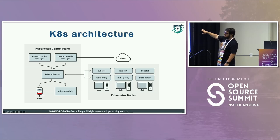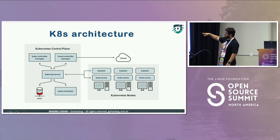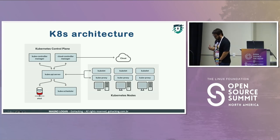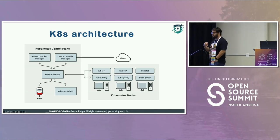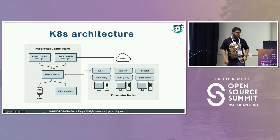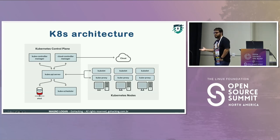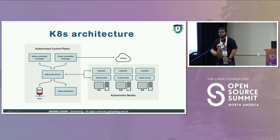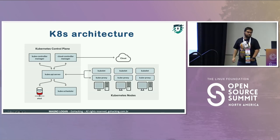The kubelet talks to the API server, or the API server sends information back to the kubelet — deploy this container on your node — and then sends health information back through the API server to etcd. The kube-proxy, by default, manages IP tables on Linux to handle internal and external communications inside your cluster. The runtime engine, which used to be Docker by default, now has other options such as containerd, CRI-O, and podman.